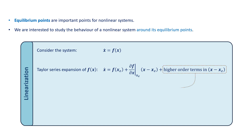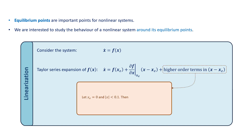So if x_e is 0 and x is between minus 0.1 and 0.1, then x minus x_e is between minus 0.1 and 0.1. The term x minus x_e squared is between 0 and 0.01, which is much smaller than the absolute value of x minus x_e. Similarly, x minus x_e cubed is between minus 0.001 and 0.001 and is certainly a negligible term as long as x is between minus 0.1 and 0.1.